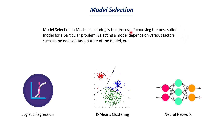We need to find the best model suited for a particular problem — this step is called model selection. This depends on the dataset that we have, and based on that we may need to use different kinds of models.